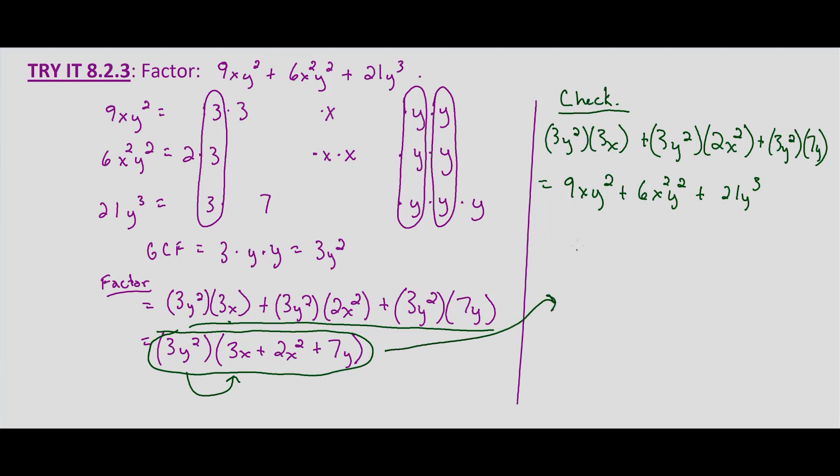The most we can do is write it in terms of descending order of the exponents on x. So technically, we could rewrite this as 3y² times 2x² plus 3x plus 7y.